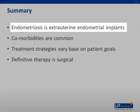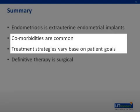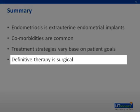In summary, endometriosis at its most basic level is caused by endometrial tissue that is implanted, growing, and cycling outside of the uterus. The medical comorbidities are extremely important to consider both in making the diagnosis, counseling your patient, and treatment. Those same comorbidities may determine your treatment goals and strategy. The definitive therapy is surgical, but for many patients, that's simply not an option.